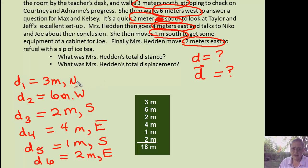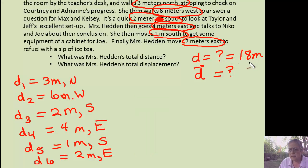Let's go ahead and add these numbers together. 3 plus 6 is 9, 11, 15, 16, 17, 18. So I can write down the total distance is 18 meters. Half the problem is done. Now we have to worry about this displacement.